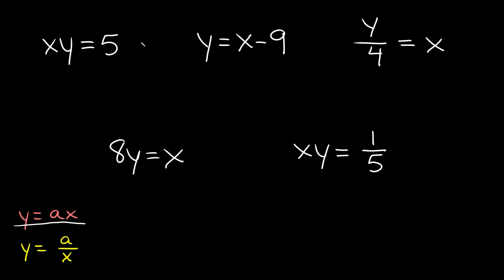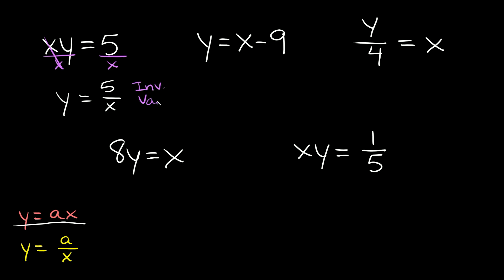Let's start with this one: we have xy is equal to 5. We're going to solve for y, so we divide both sides by x — these cancel out — and we get y is equal to 5 over x. We got y equal to some number over x, so this equation shows inverse variation.